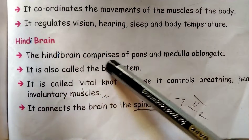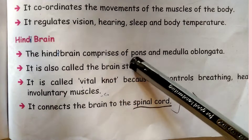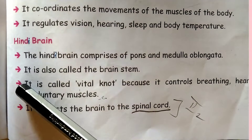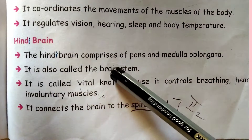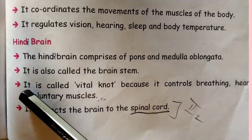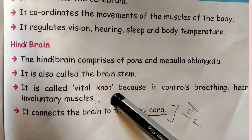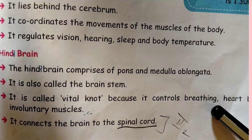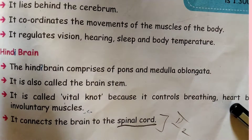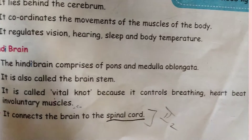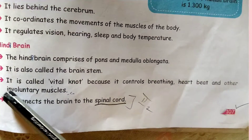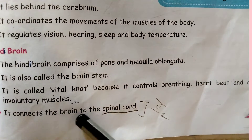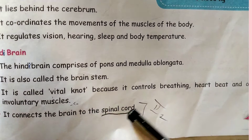The hindbrain comprises pons and medulla oblongata. It is also called the brain stem. It is called the vital knot because it controls breathing, heartbeat, and other involuntary muscles. It connects the brain to the spinal cord.